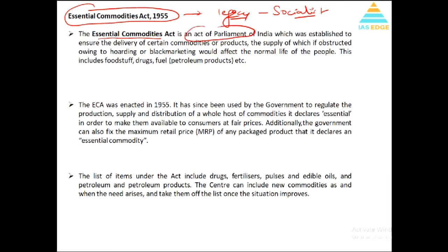The law came in 1955. It was an Act of Parliament established to ensure delivery of certain commodities — specifically those commodities which are essential for life. If the supply of those commodities is obstructed due to hoarding or black marketing, it will affect the normal life of the people. For example, food items could be there, and right now sanitizers or masks all come under the Essential Commodities Act.